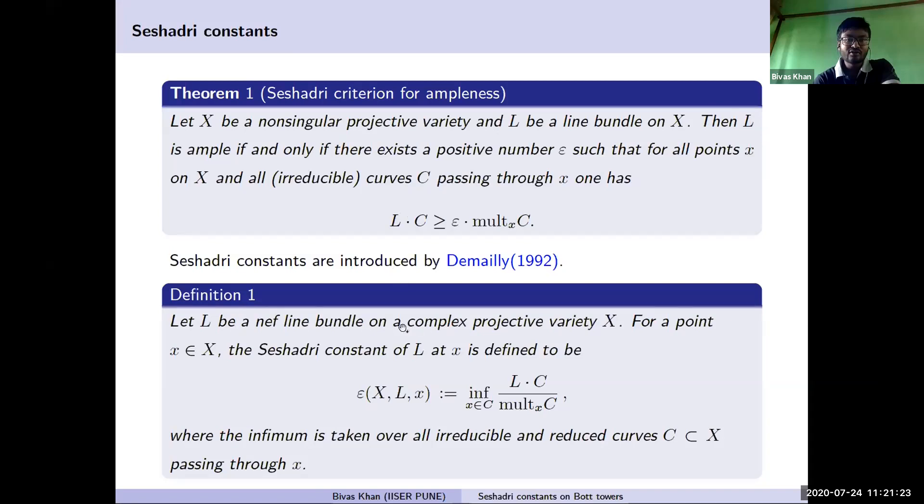Let L be a nef line bundle on a complex projective variety. For a point x in X, the Seshadri constant of the line bundle L at x is denoted as epsilon(X,L,x) and is defined as the infimum over all reduced curves C passing through the point x.